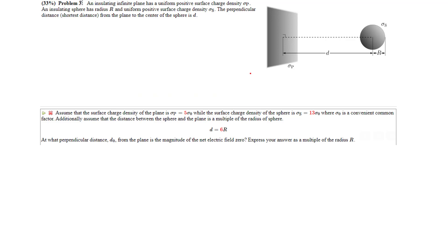We have an insulating plane with surface charge density sigma P, and an insulating sphere with radius R and surface charge density sigma zero. The perpendicular distance from the plane to the center of the sphere is D. We're given specific values for the ratio sigma P to sigma zero, and D equals 6 times the radius. At what perpendicular distance d0 from the plane is the magnitude of the net electric field zero?